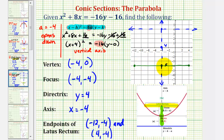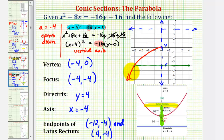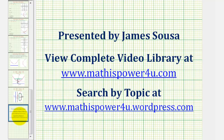Another option is to take the coordinates of the focus and add and subtract 8 from the x-coordinate. Negative 4 minus 8 gives negative 12 for the first endpoint, and negative 4 plus 8 gives positive 4 for the second. Now, with three points on the parabola — the vertex and both endpoints of the latus rectum — we can make a more accurate sketch. I hope you found this explanation helpful. Thank you.